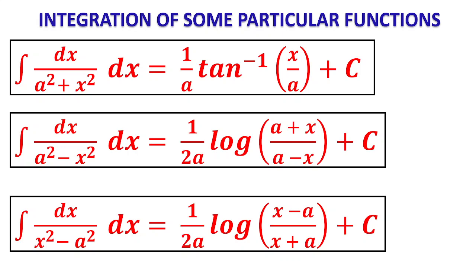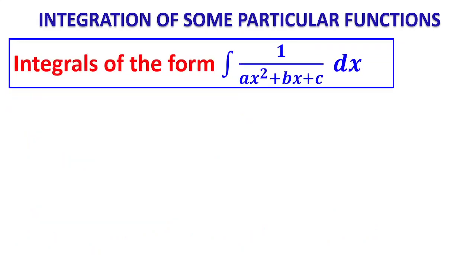In all three integrals of particular function form, our job is to identify what is 'a' and what is in place of x. In all three formulae, the coefficient of x² is 1 only — in the first it is +1, in the second -1, in the third +1. Therefore, the coefficient of x² must be 1 before you can apply these formulae.